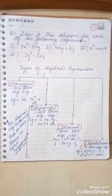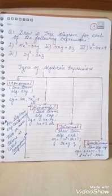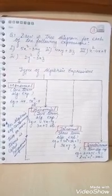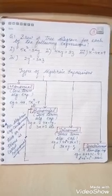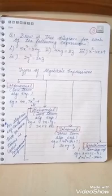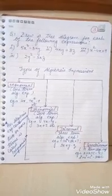The next topic is types of algebraic expressions, divided into four parts. First is monomial: an algebraic expression with one term is called a monomial. For example, 4x, 7x⁵, and −9, etc.